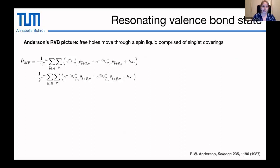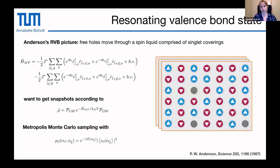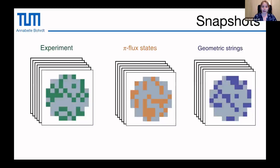Another theory put forward by Anderson already in 1987 is the resonating valence bond (RVB) picture. Here the spins comprise a spin liquid — a singlet covering of the lattice — and holes can move freely through this. A nice thing about this theory is that you can directly generate snapshots, since the mean-field Hamiltonian is quadratic. We can use Metropolis Monte Carlo sampling to sample snapshots from this Hamiltonian. So we can generate snapshots for any given temperature and doping value for this PyFlux or RVB theory.